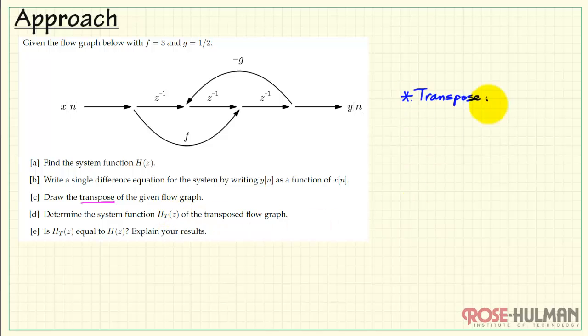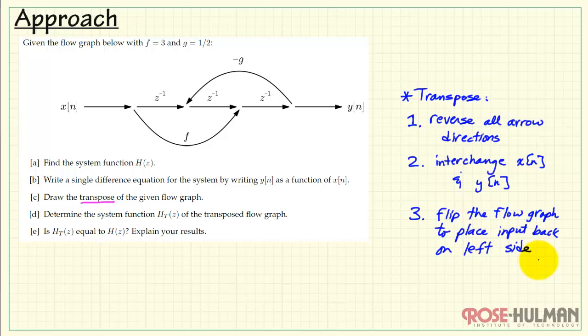Now in part c, we want to draw the transpose of the given flow graph. The transpose is three steps. First, we reverse all the arrow directions, we then interchange the labels x and y, and then we flip the flow graph around to place the input back on the left side.